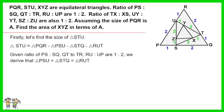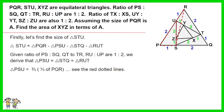Given ratios of PS to SQ, QT to TR, RU to UP are 1 to 2, we derive that triangle PSU equals triangle STQ equals triangle RUT, as shown by the red dotted lines on the diagram. We derive that triangle PSU equals 2/3 times 1/3 of triangle PQR. Working out the equation, we have triangle PSU equals 2 over 9 of A.